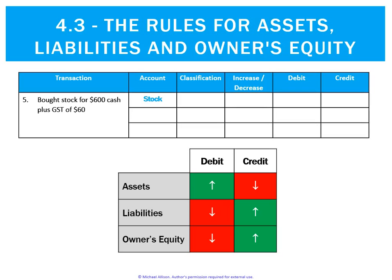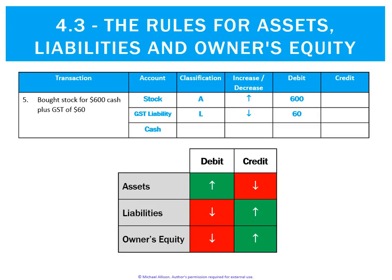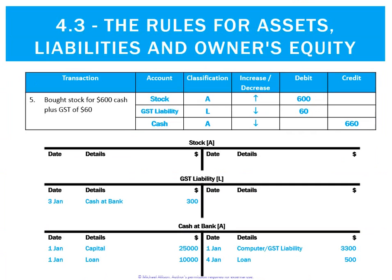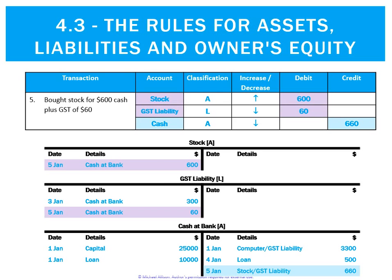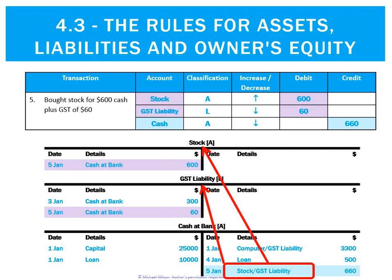Bought stock for $600 cash plus $500 GST. Stock is an asset increasing — that's a debit. I'm being charged GST, so when I pay it, it decreases my GST liability, and liabilities decrease on the debit side. Cash is an asset decreasing — assets decrease on the credit side. Posting: debit to stock, debit to GST, credit to cash at bank. For stock and GST the reference is 'cash at bank', but in the cash at bank ledger there's a double reference because the credit is made up of two entries — stock and GST.